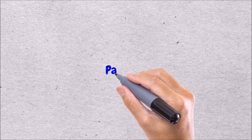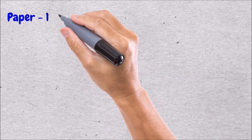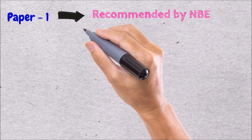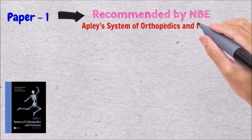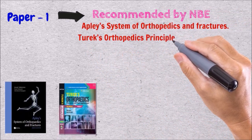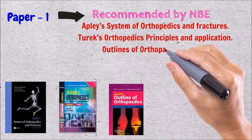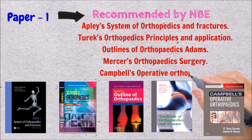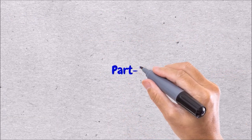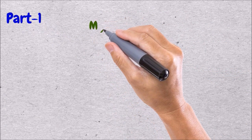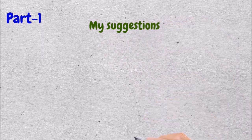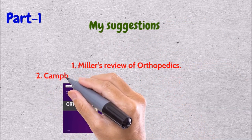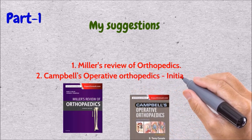As per the DNB curriculum, there are books recommended by the National Board of Examinations. The books recommended for Paper 1 are Apley's, Turek's, Adams, Mercer's, and Campbell's Operative Orthopaedics. But from my experience, I would suggest Miller's Review of Orthopaedics and the initial chapters from Campbell's Operative Orthopaedics especially for Paper 1.